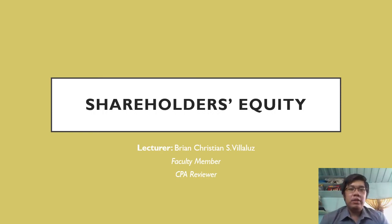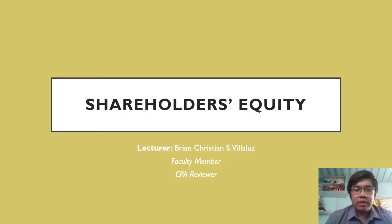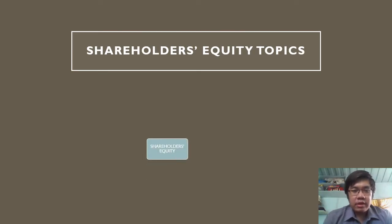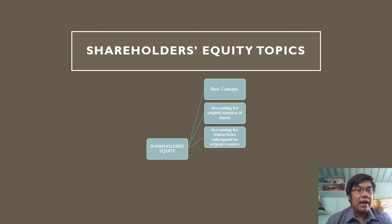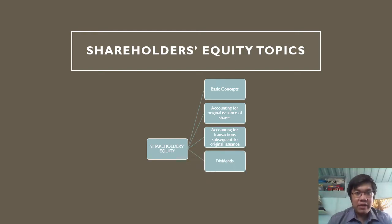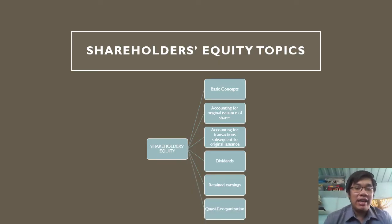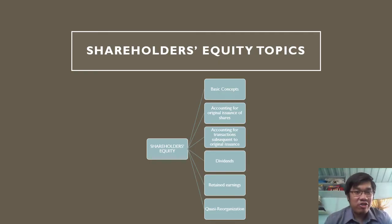Hello everyone, today I will discuss shareholders' equity. There are six major topics: first, basic concepts; second, accounting for original issuance of shares; third, accounting for transactions subsequent to original issuance; fourth, accounting for dividends; fifth, retained earnings; and sixth, quasi-reorganization. Each of these major topics has their own video lecture, so there will be six lecture videos for shareholders' equity.